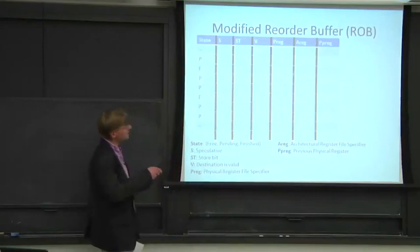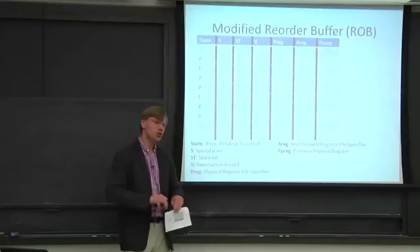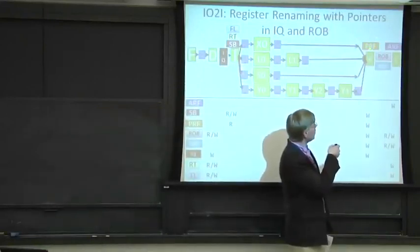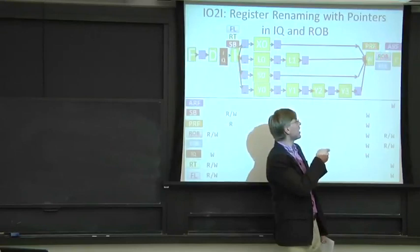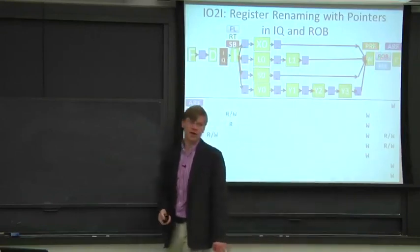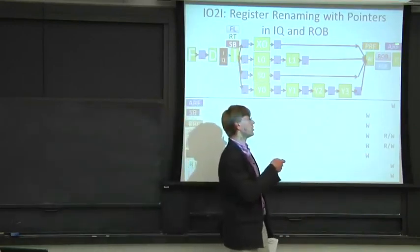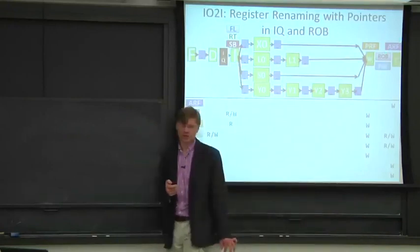Now we add extra bits. The first new field is an architectural register file specifier. When we reach commit, the reorder buffer drives the copy from the physical register file into the architectural register file. But since we've renamed everything, it's no longer an identity map from physical to architectural register numbers. So we need to know where to actually write in the architectural register file — that's what this field does. It tells us where to write.